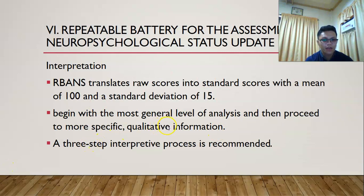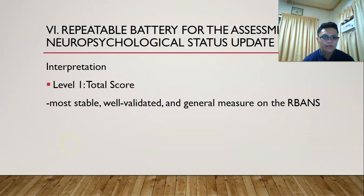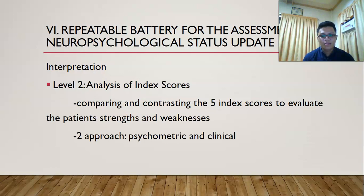Interpretation of RBANS follows a three-step process. Level 1, the total score, is the most well-validated general measure of RBANS and is used to monitor deterioration or improvement in the client's functioning, assuming retesting indicates a significant difference of generally 15 points or more. Level 2, analysis of index scores, involves comparing and contrasting the five index scores to evaluate the examinee's strengths and weaknesses. A good practice for the clinician is to apply both the psychometric and the clinical qualitative approach.